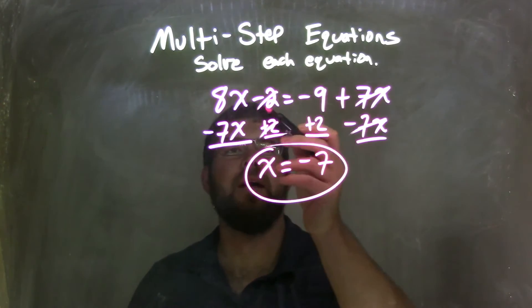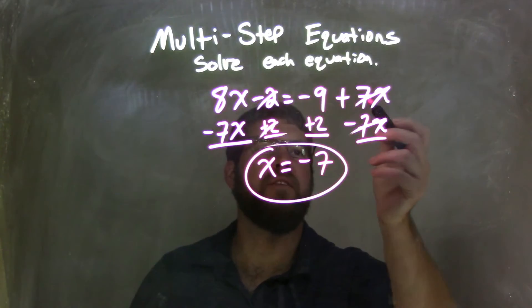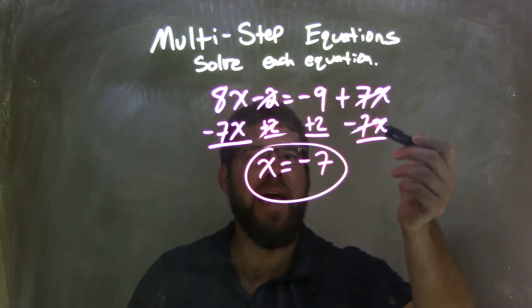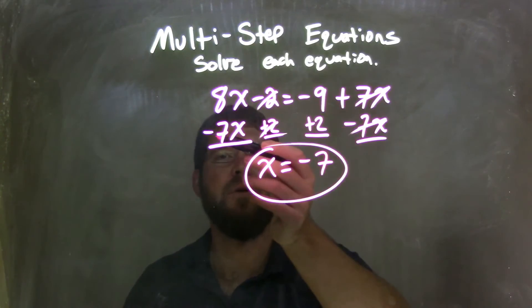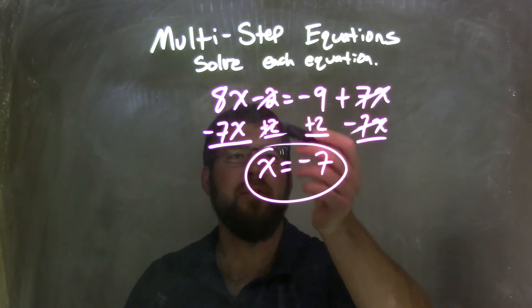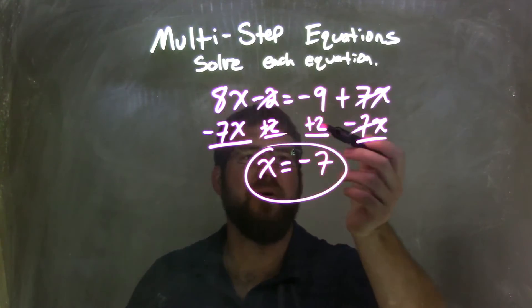So, let's recap. We started with 8x minus 2 equals negative 9 plus 7x. I brought the x's to one side, so I subtracted 7x from both sides. Then I took the numbers and brought them to the other side, so I added 2 to both sides.